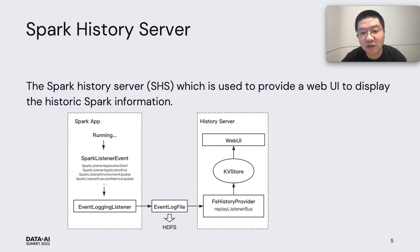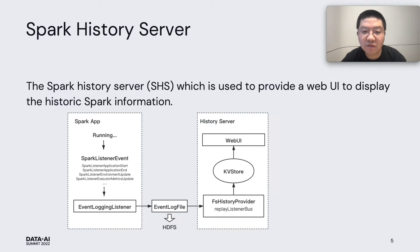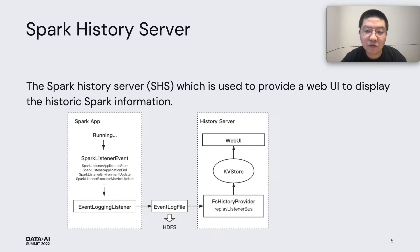In order to better understand the significance of our effort, I will give you a brief introduction about the basic principle of the open source Spark history server. The Spark history server is built on the Spark event system. During a Spark application is running, a large number of events containing runtime information will be generated, such as application start, stage complete, metrics update, etc. These events are serialized into an event log file with JSON format by a listener, and they are routed to an external file system such as HDFS.